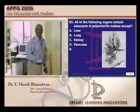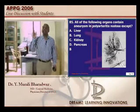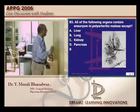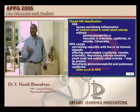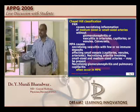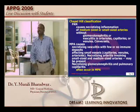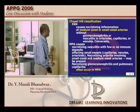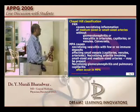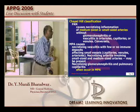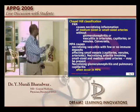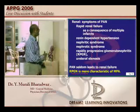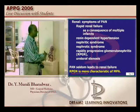Now in polyarteritis nodosa, where you see the aneurysmal dilatation — or rather where you don't see it — is very important. The Chapel Hill classification has been given for this. One important point: microscopic polyangiitis involves the pulmonary capillaries, but polyarteritis nodosa does not. That is the fundamental difference between the two. Polyarteritis nodosa can lead to aneurysmal dilatation.